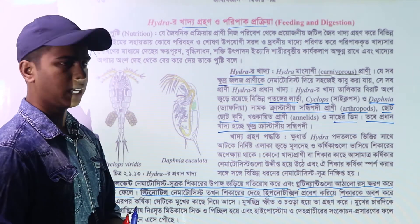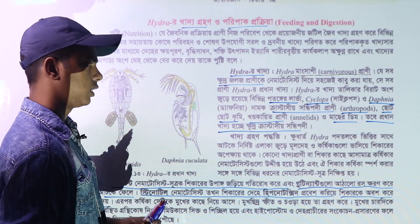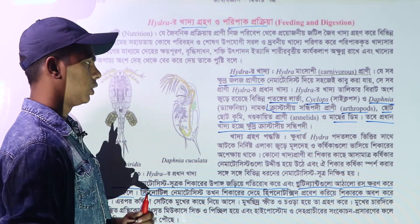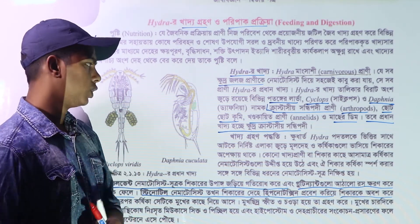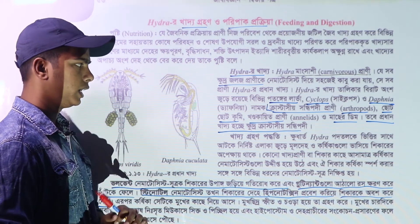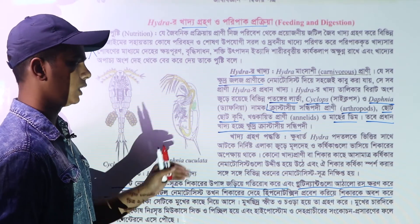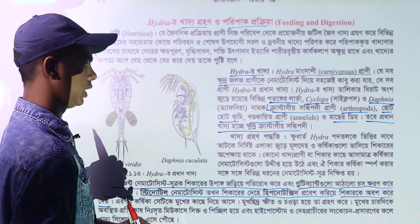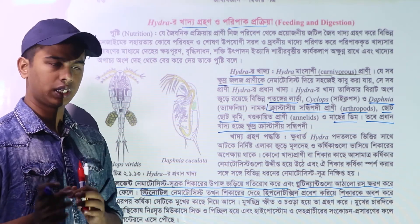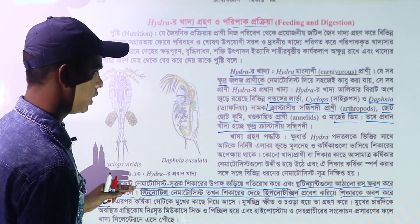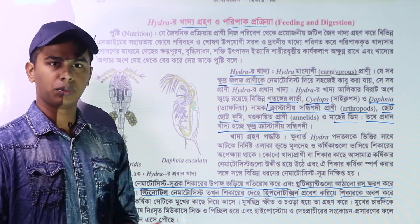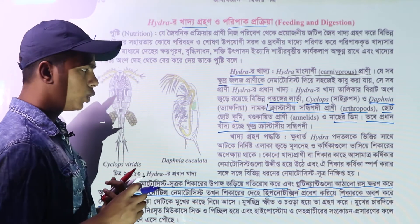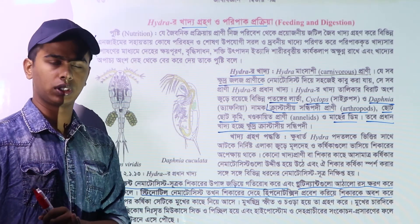There are various larvae, cyclops, daphnia, and crustaceans, which are the most important ones. These are the most important ones, which are the most important food organisms of Hydra.